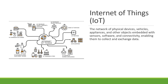The Internet of Things (IoT) refers to the network of physical devices, vehicles, appliances, and other objects embedded with sensors, software, and connectivity. IoT devices generate and exchange data, enabling automation and advanced analytics.